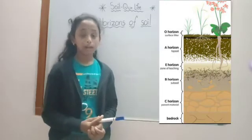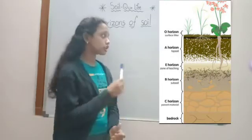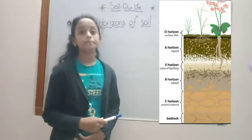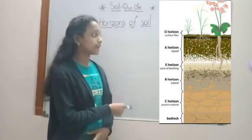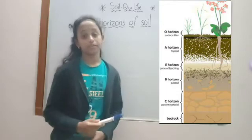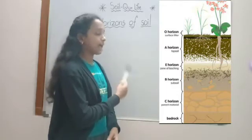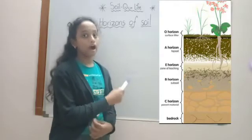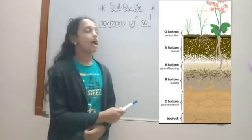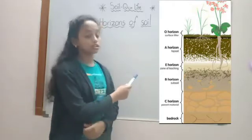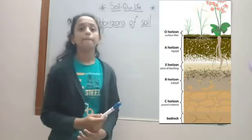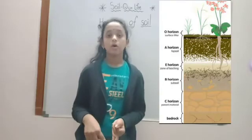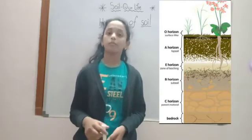The B-horizon is also called subsoil. This layer is beneath the E-horizon and above the C-horizon. It contains clay and minerals that it receives from the layers above, as mineralized water drips through the soil above. These minerals include iron, aluminium oxide, and calcium carbonate.